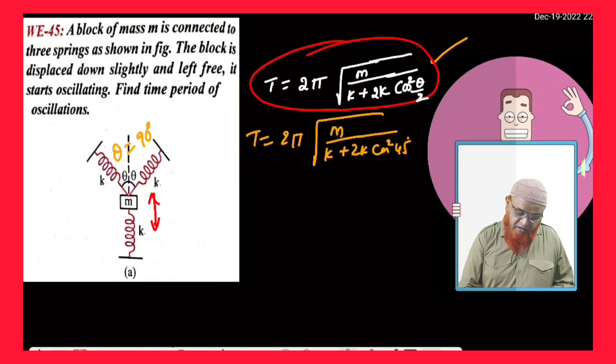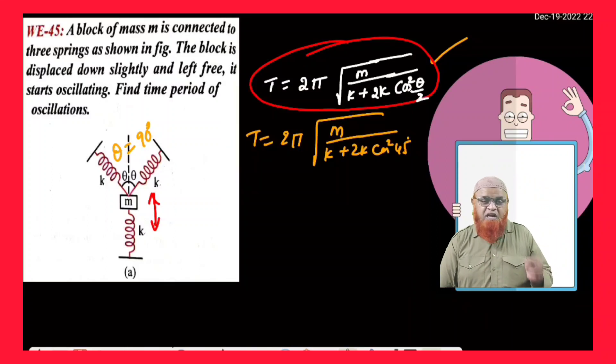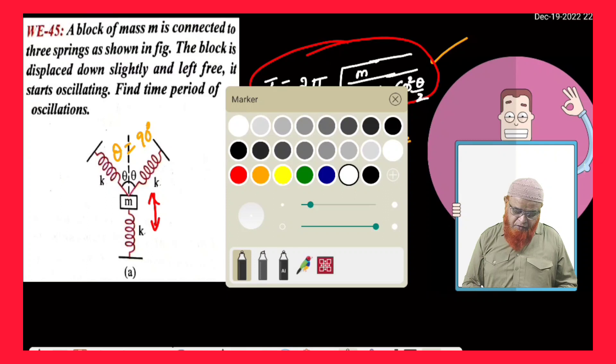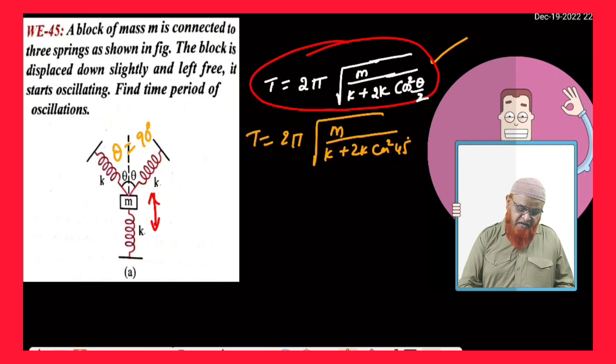If this is cos square theta by 2, then you can take the value of theta as 90 degrees and substitute cos square theta by 2, that is 90 by 2 which is cos 45, cos square 45. Let us see what I am going to get now by taking this concept.